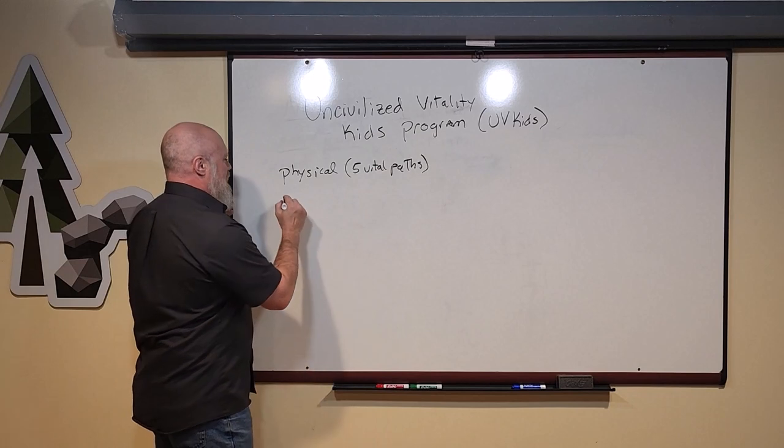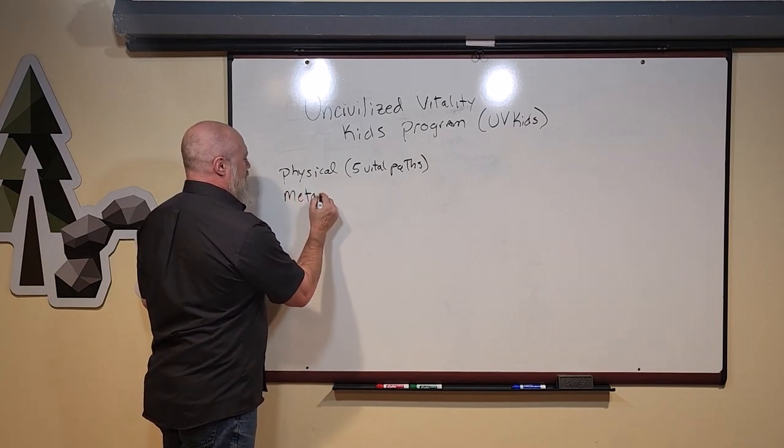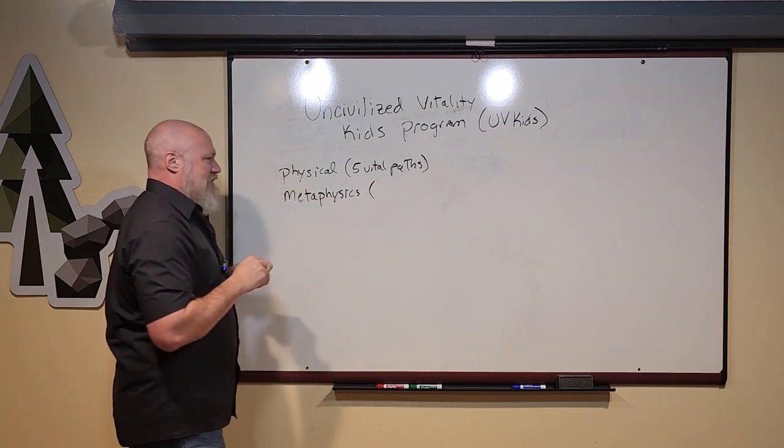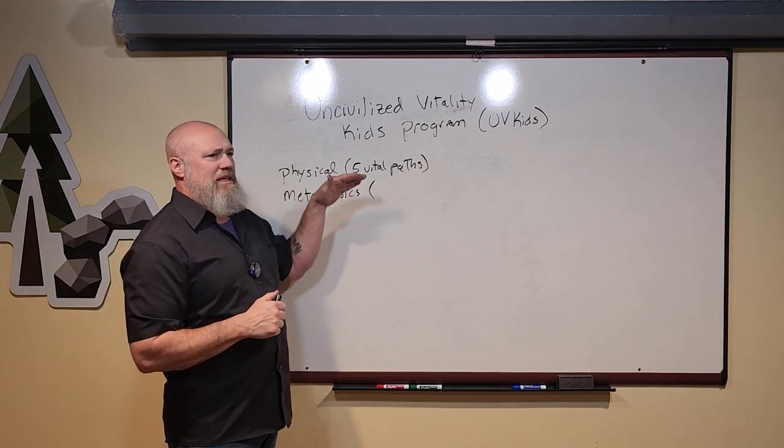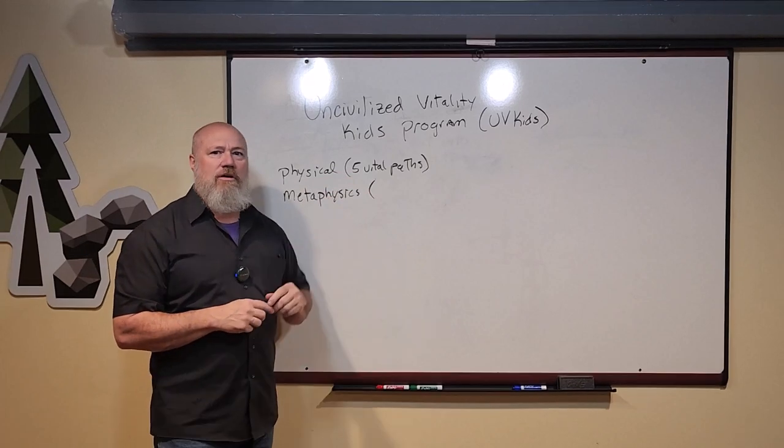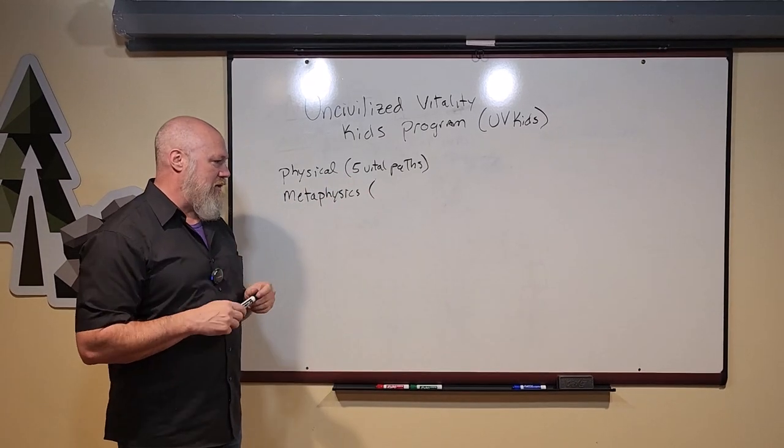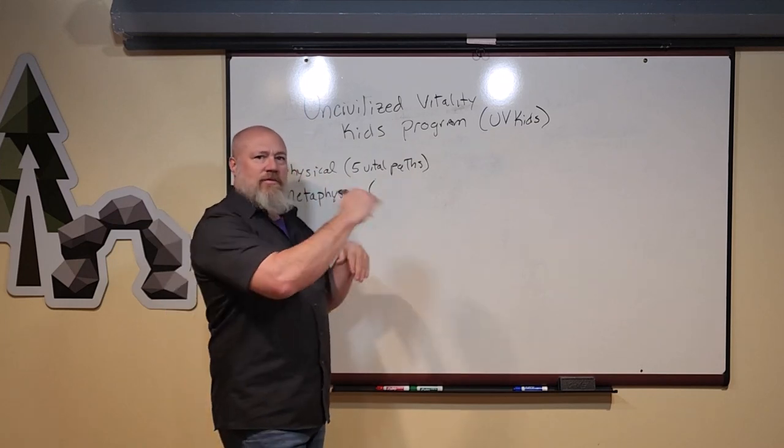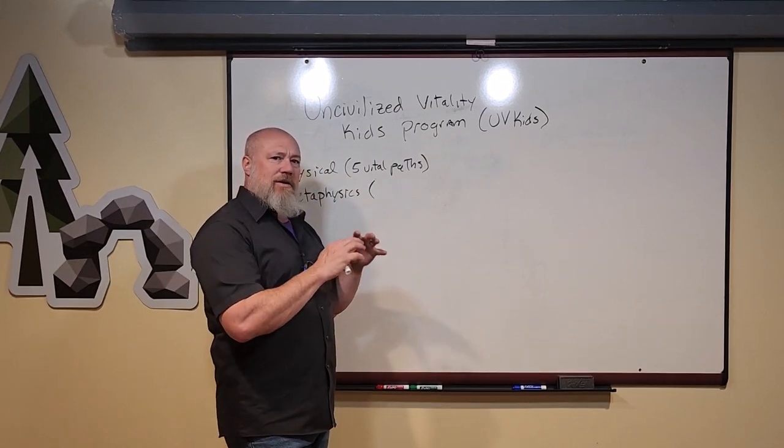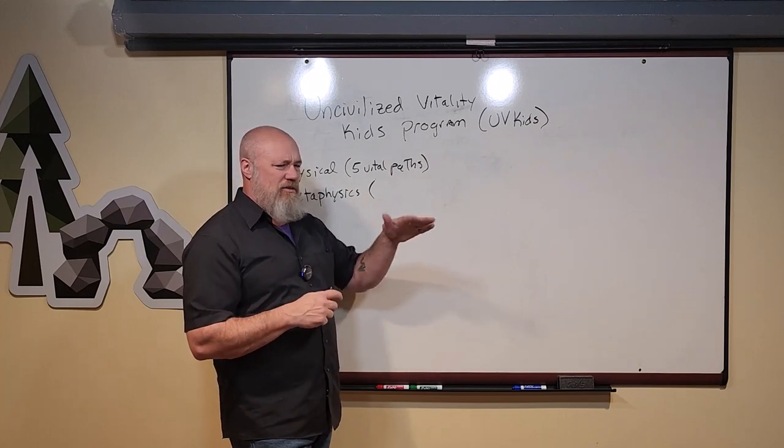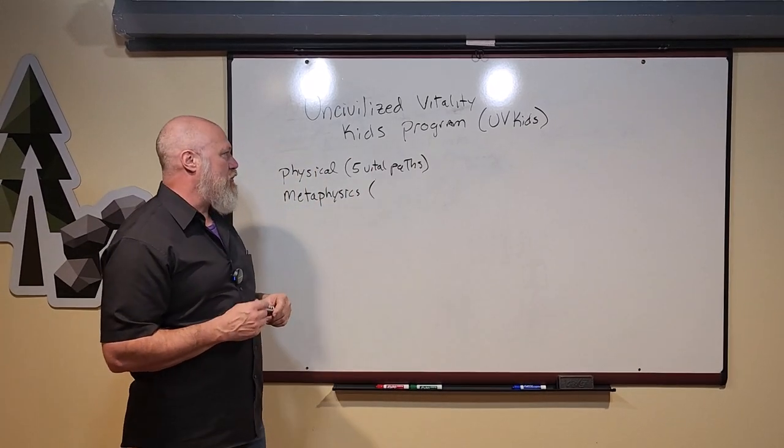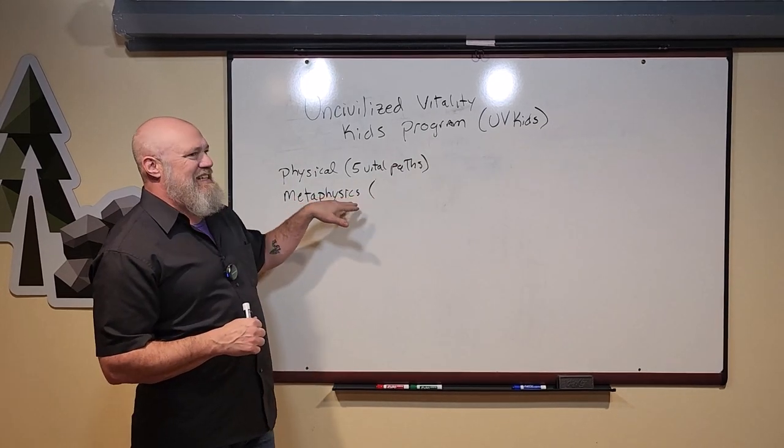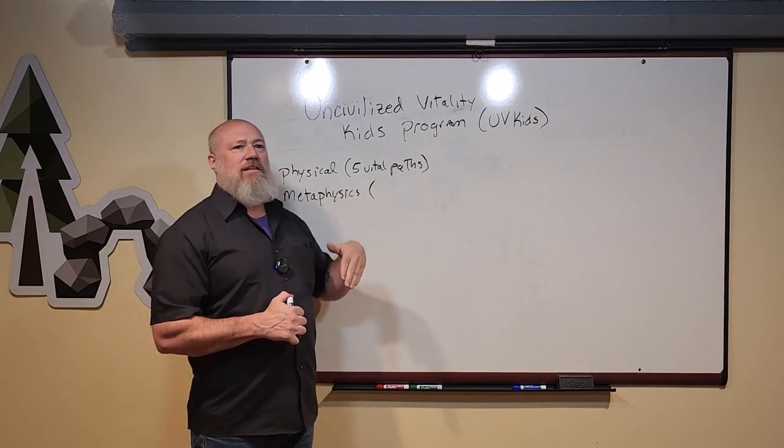The next area of education for a human, metaphysics. Now metaphysics is at the family level of my organizational hierarchy. You can check out other videos on that. The individual, the family unit, the community, then you have cultures and then society, and there's subcultures as well, somewhere between community and culture level of organization. And the metaphysics education comes in at the family level.